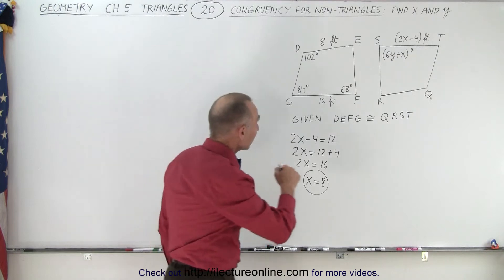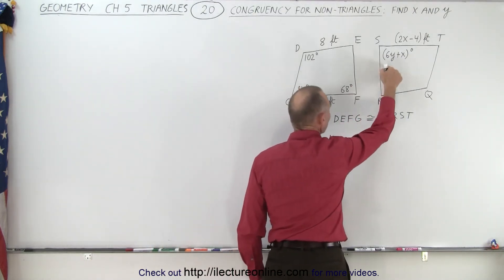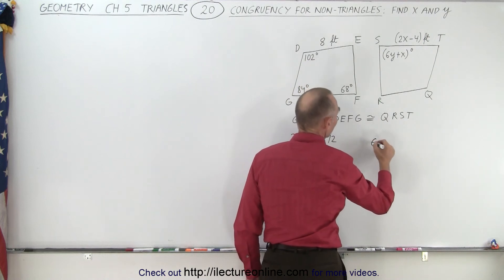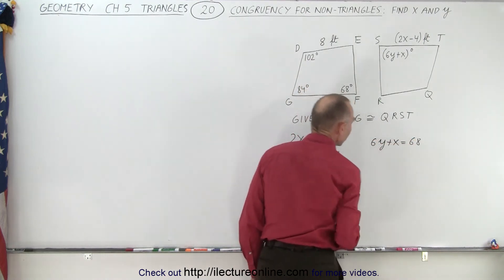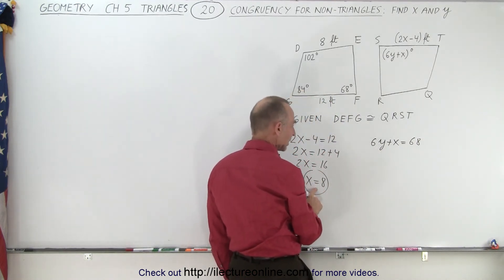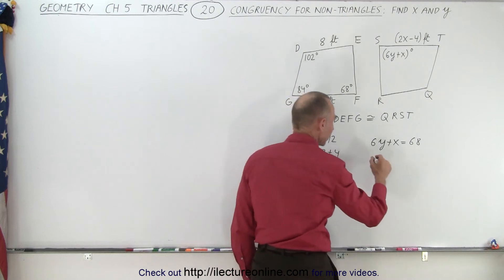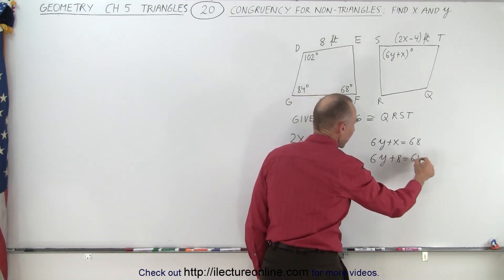Now we can also see that these two are corresponding angles. If that's true, then we can also write that 6Y plus X must equal 68 degrees. And so here we already solved for X equal 8 in the previous equation. So now we can write that 6Y plus 8 is equal to 68.